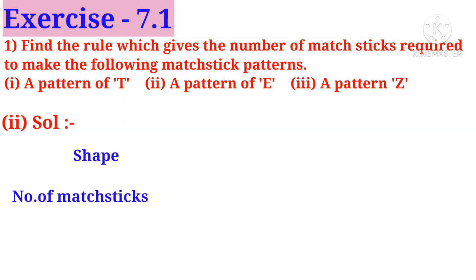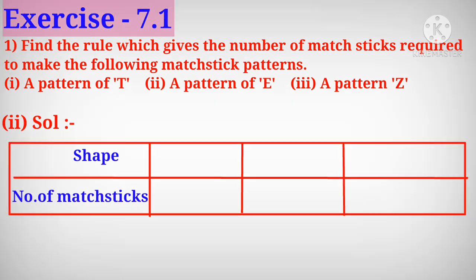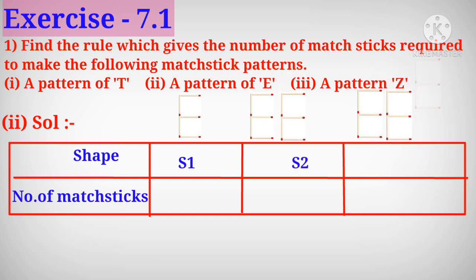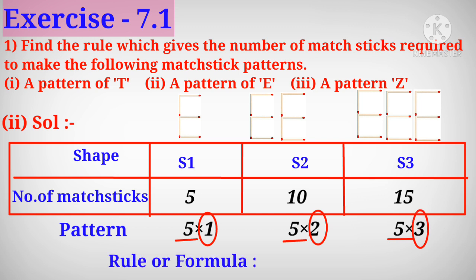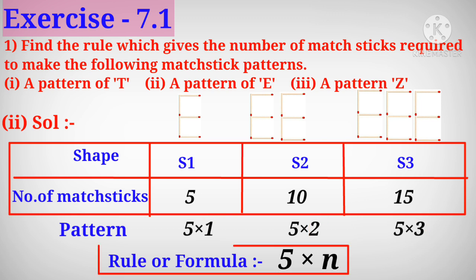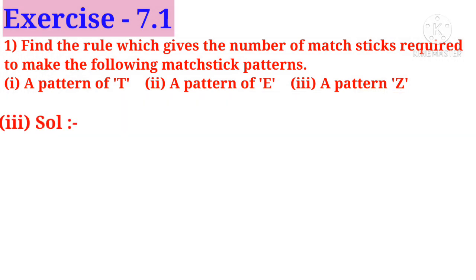Second solution: a pattern of E. In first shape, a pattern of E is there; in second shape, two E's are formed; in third shape, three E's are formed using magic sticks. In first shape, five magic sticks are used; in second shape, ten; in third shape, fifteen. The pattern is: 5×1, 5×2, 5×3. The first number five is constant and the second numbers one, two, three are changing. So the formula is five into n.